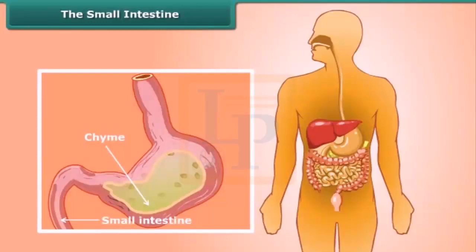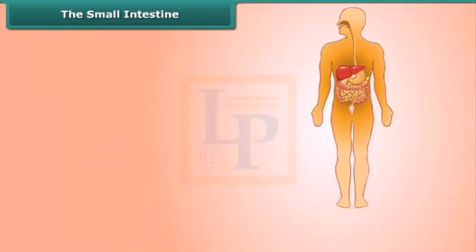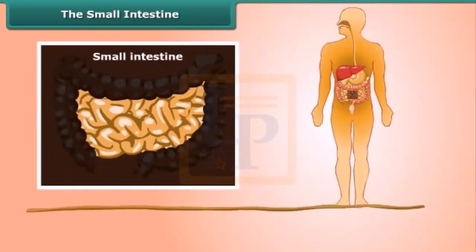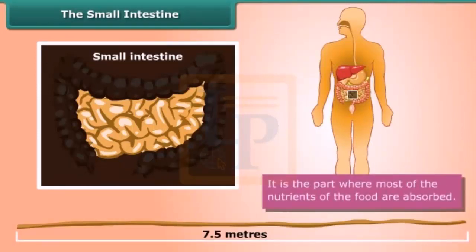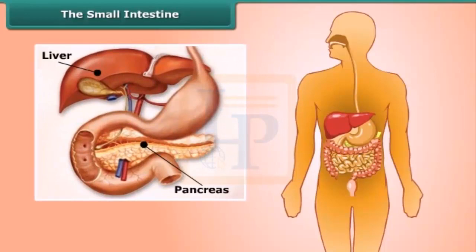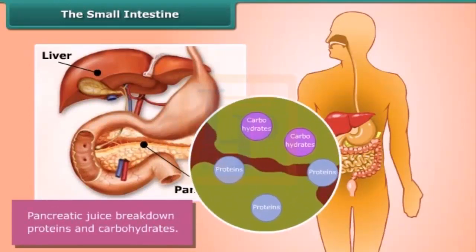After about four hours in the stomach, food changes to chyme and moves into the small intestine. The small intestine is the longest part of our digestive system — about 7.5 meters long and highly coiled. It is the part where most of the nutrients of the food are absorbed. The liver and the pancreas also join the digestion process. Liver secretes bile juice, stored in the gallbladder, which helps in the digestion of fats.